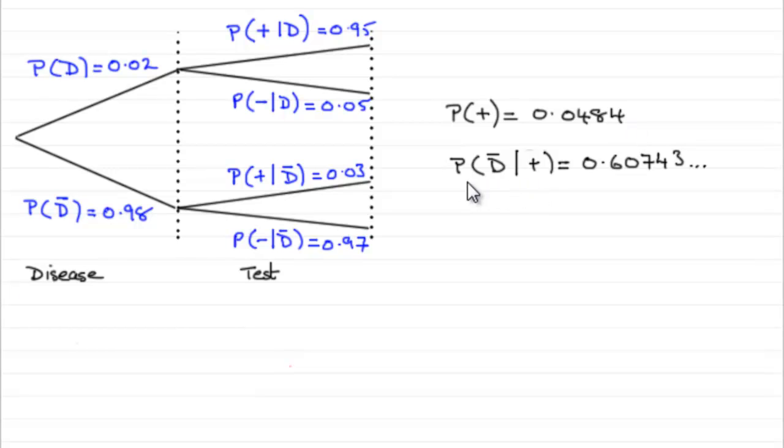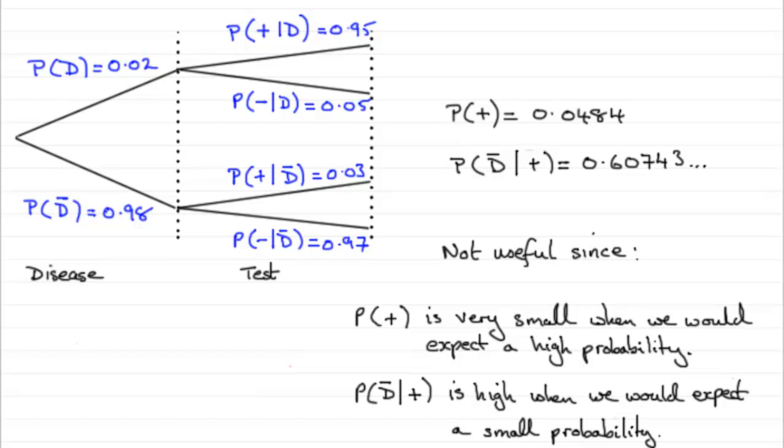And when it comes to this, the probability that I don't have the disease, given that the test was positive, well, I would expect a very small value. Small probability. But look what we've got. 0.6 odd. So that's a large probability. So this test is clearly not useful.